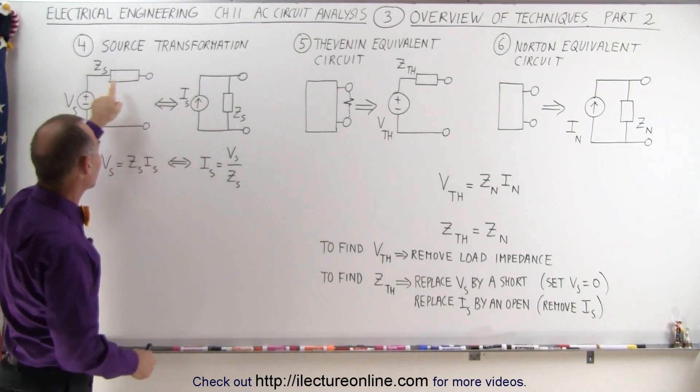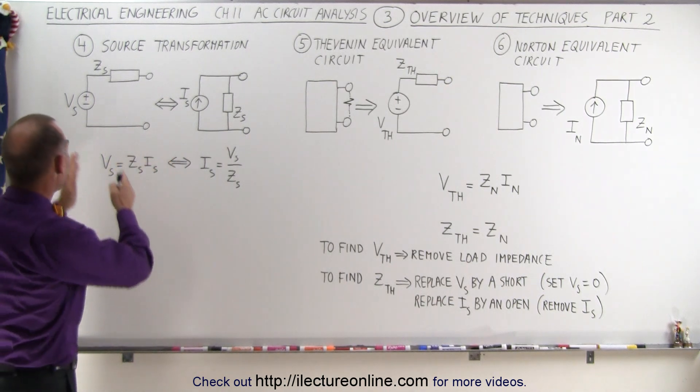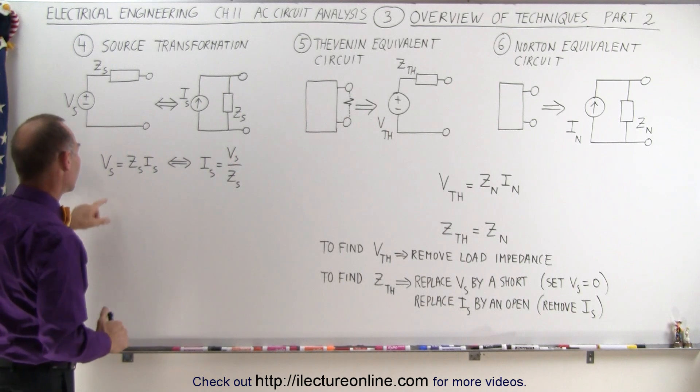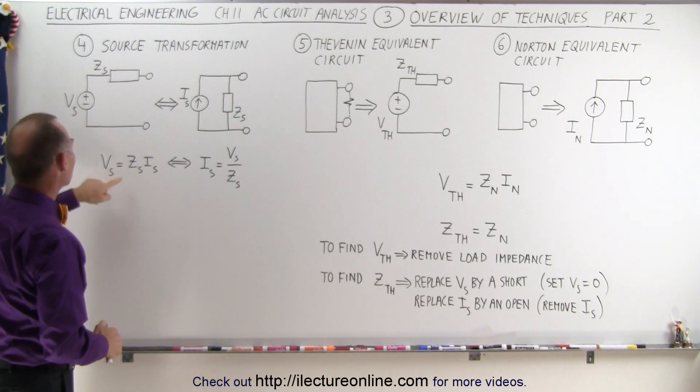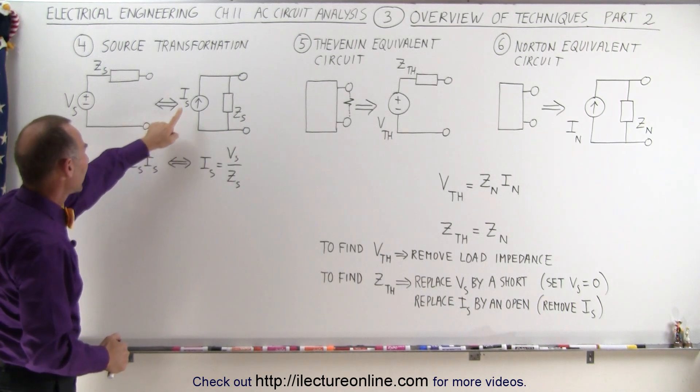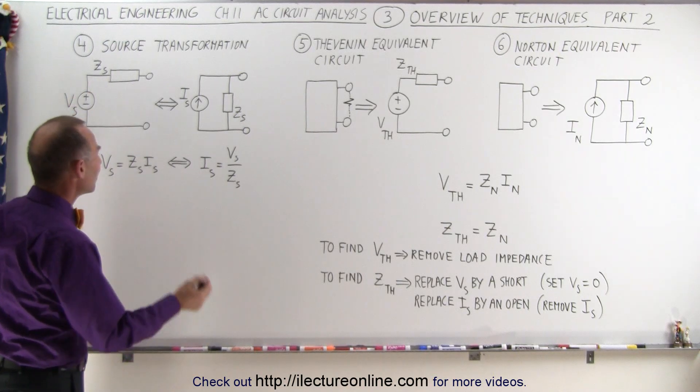Notice that the impedances are the same, but the relationship between the current in one instance and the voltage in the other instance can be drawn from these equations right here. The voltage of this source is equal to the impedance times the current of that source, and the current of that source is equal to the voltage of this source divided by the impedance.